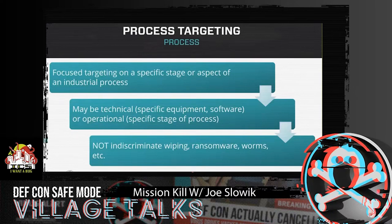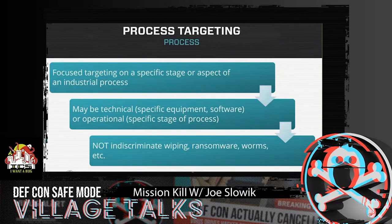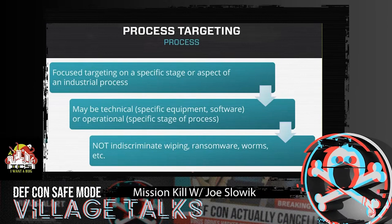What we want to talk about today is a more focused type of attack that I refer to as process targeting, where instead of just blindly looking to disrupt whatever is reachable within an environment, attackers instead focus on a specific stage or aspect of an industrial process. This could be technical — looking for specific equipment, software, or a known vulnerability — or it could be operational, understanding which stage of a manufacturing line represents a critical path such that disrupting it brings the entire line down.